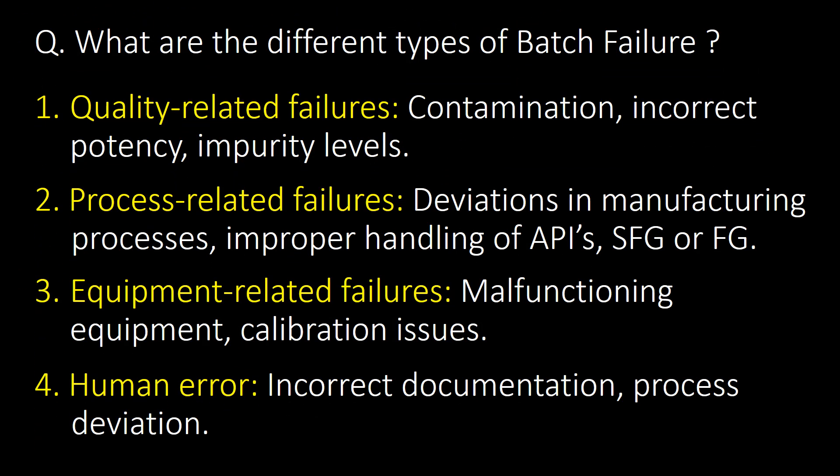What are the different types of batch failure? The first, very common type is quality-related failures, which includes contamination, incorrect potency, or impurity levels. The second type is process-related failures, which includes deviations in manufacturing processes.